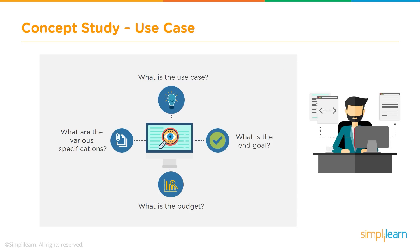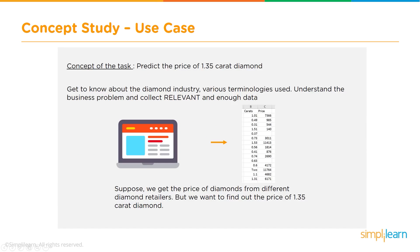Here are a few examples. We want to see what are the various specifications, what is the end goal, what is the budget, and is there an example of this kind of problem that has been solved earlier. A very specific example could be to predict the price of a 1.35 carat diamond, where there may be relevant information inputs available and we want to predict the price.